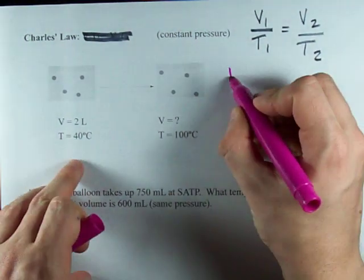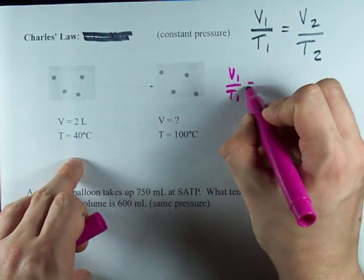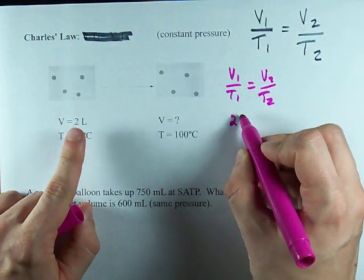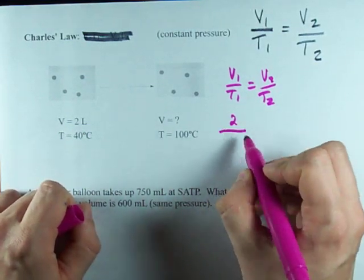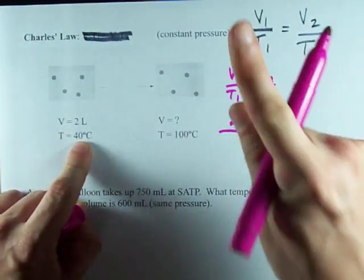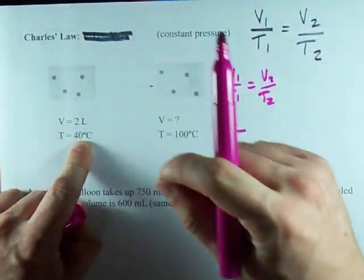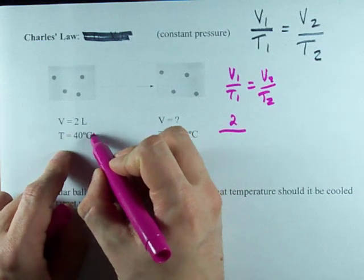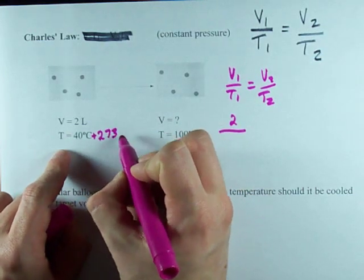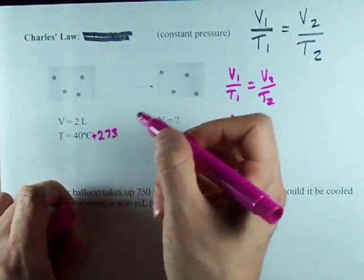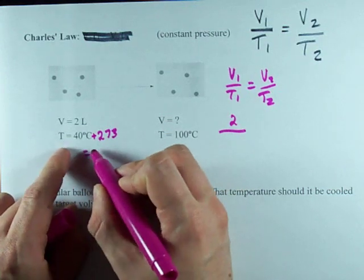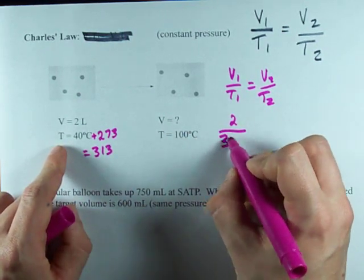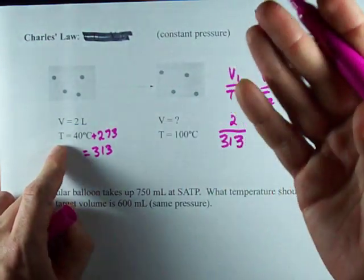Let's just go with V1 over T1 equals V2 over T2. My initial volume is 2 liters. My initial temperature is 40 Celsius. But in Charles' Law, you have to use temperature in Kelvin. To get your temperature in Kelvin, you add 273.15. I'm gonna be lazy here, just do 273. That gives me 313. Must be in Kelvin, cannot stress that enough.